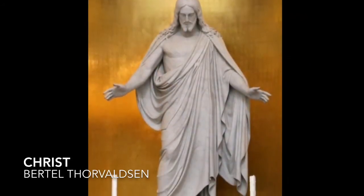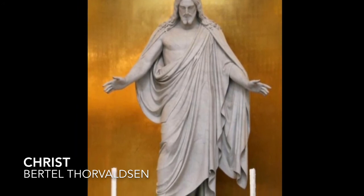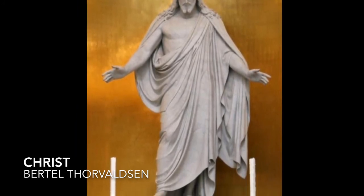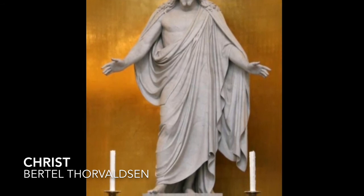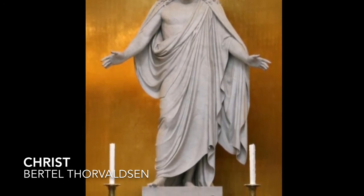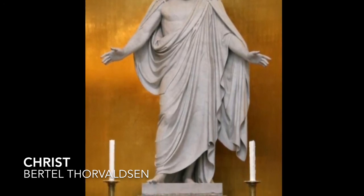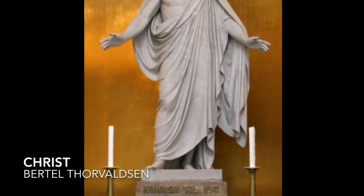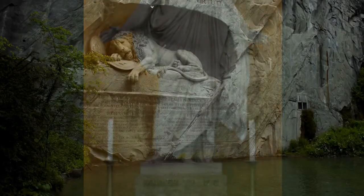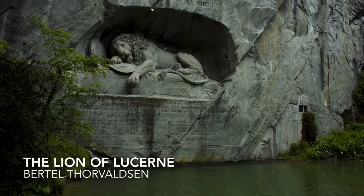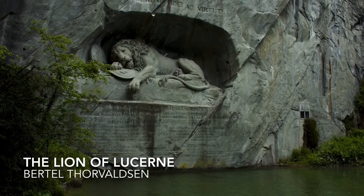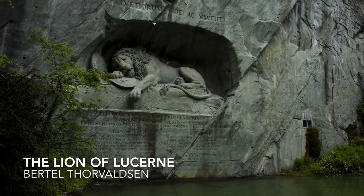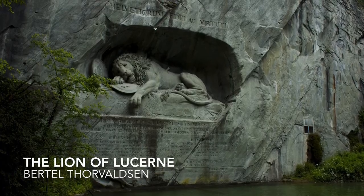His rival, Bertel Thorvaldsen, was a famous Danish sculptor. His most famous sculpture is Christ, which is located in Copenhagen. During his life he created more than 500 sculptures, reliefs, and portrait busts, and he donated all of his works to the city of Copenhagen. His other famous piece is The Lion of Lucerne, which he designed. Both of these artists were considered the best during the neoclassical period.